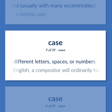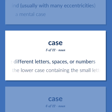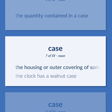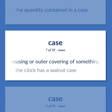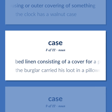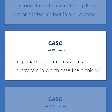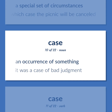CASE: For English, a compositor will ordinarily have two such cases — the uppercase containing the capitals and the lowercase containing the small letters. The quantity contained in a case. The housing or outer covering of something — the clock has a walnut case. Bed linen consisting of a cover for a pillow — the burglar carried his lute in a pillowcase. A special set of circumstances — it may rain, in which case the picnic will be cancelled. An occurrence of something — it was a case of bad judgment.